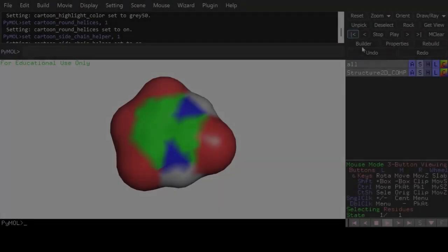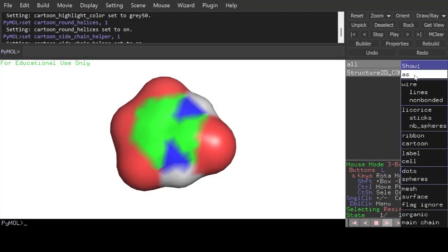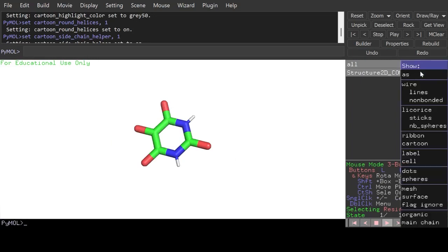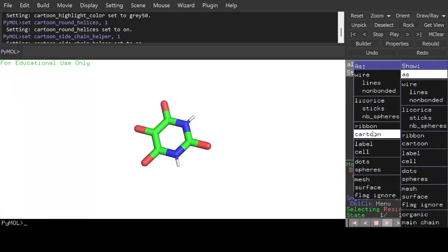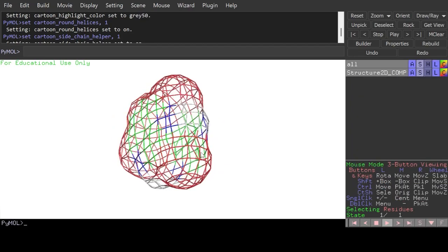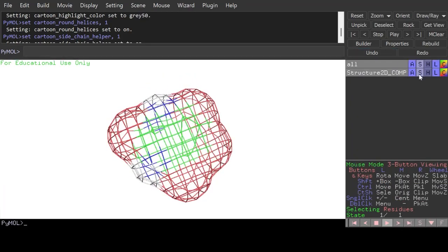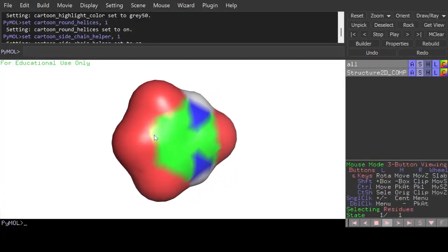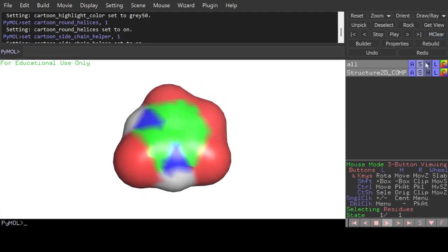Here's a bonus tip. If you are interested in exploring the three-dimensional structure of a molecule in more detail, you can use molecular visualization software such as PyMOL or Jmol. These tools allow you to manipulate molecules in three dimensions, visualize their bonds and atoms, and even perform molecular docking or molecular dynamics simulations. It's a great way to gain deeper insights into the properties and behavior of the molecules you are studying.